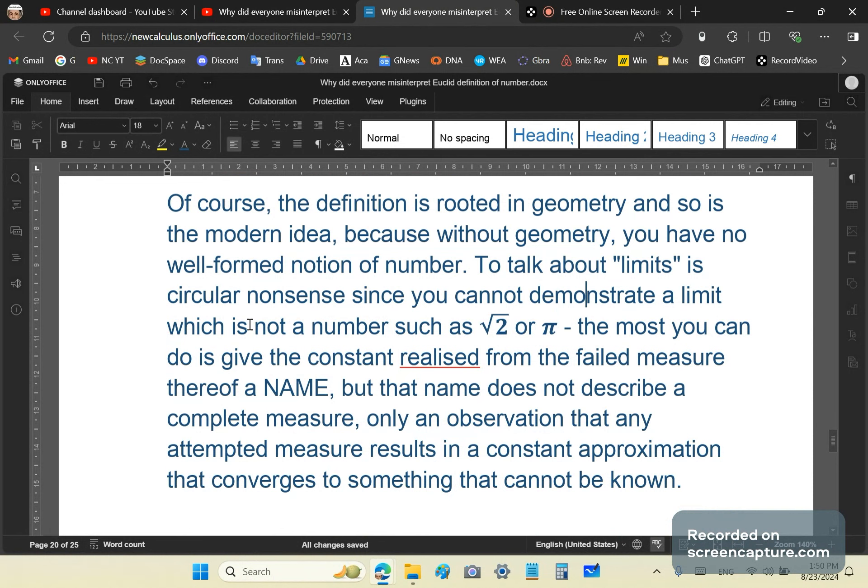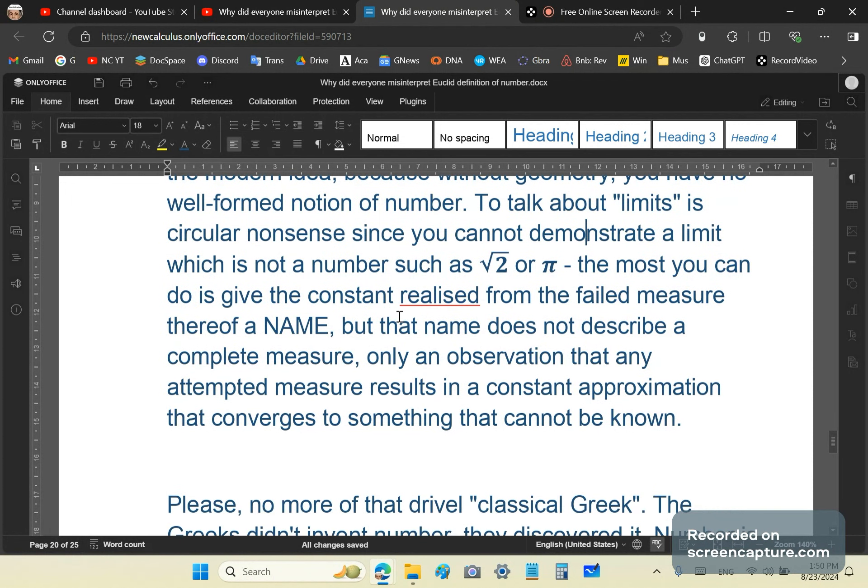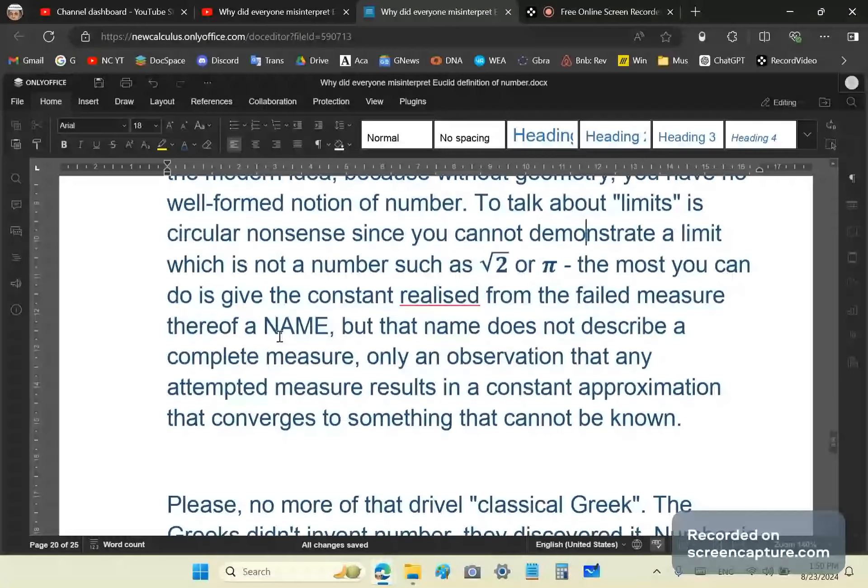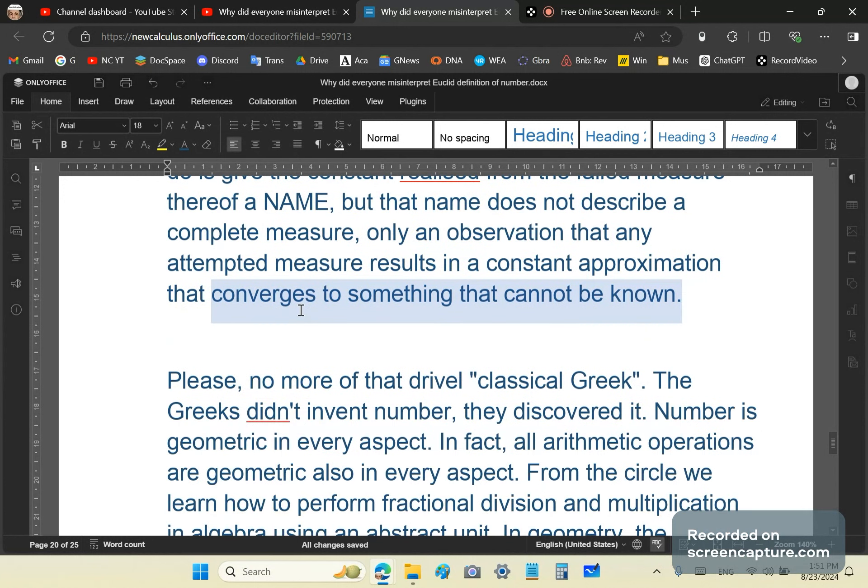Whether the Greeks realized it correctly as they did, or if they hadn't, would not change its meaning in any way whatsoever. So, of course, the definition is rooted in geometry and so is the modern idea, because without geometry, you have no well-formed notion of number. You have no notion of number. At least no valid systematic derivation of number. Okay, all you have is the garbage of set theory where you just equate things to stones and then you count up stones like a juvenile, because that's all you can do in set theory. To talk about limits is circular nonsense, since you cannot demonstrate the limit which is not a number, such as √2 or π. The most you can do is give the constant that is realized from the failed measure thereof of these ratios a name. But that name does not describe a complete measure, only an observation that any attempted measure results in a constant approximation that converges to something that cannot be known.